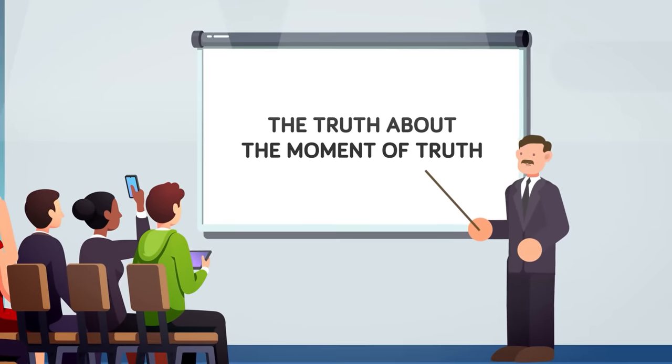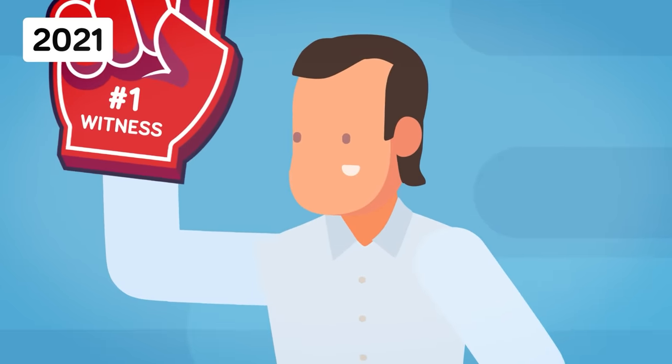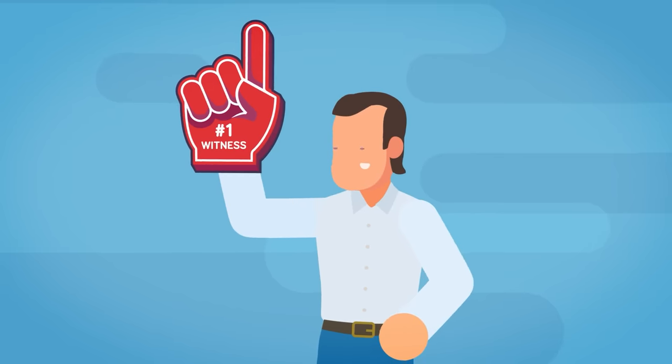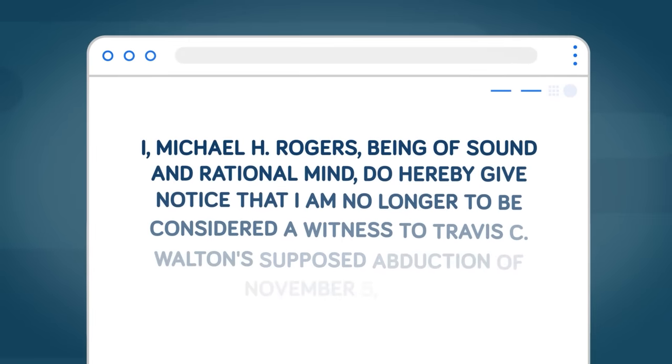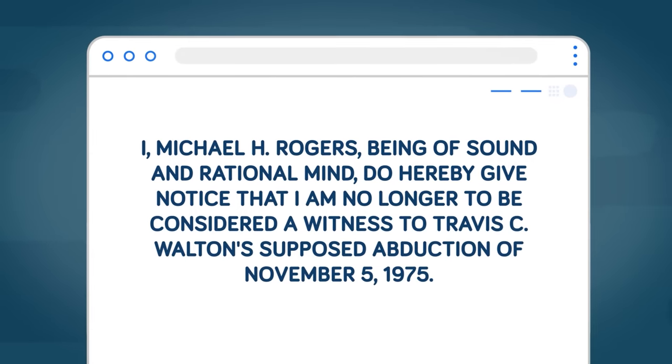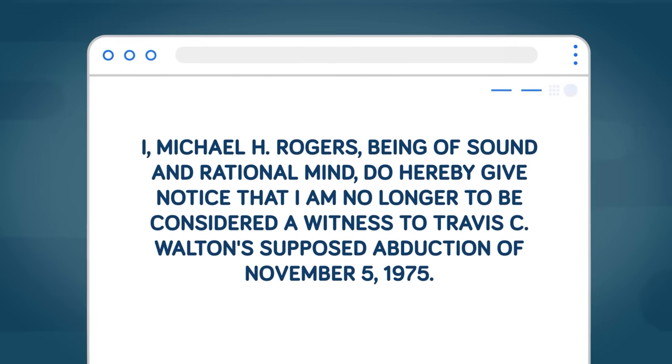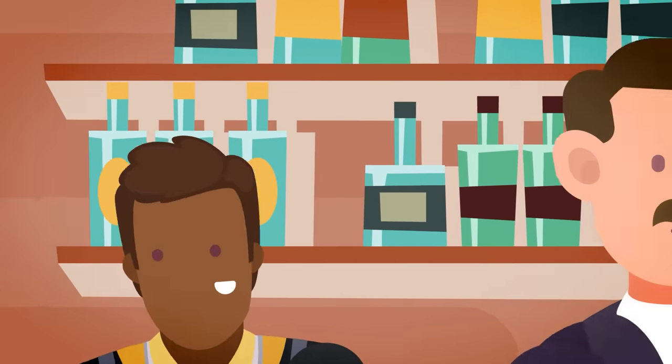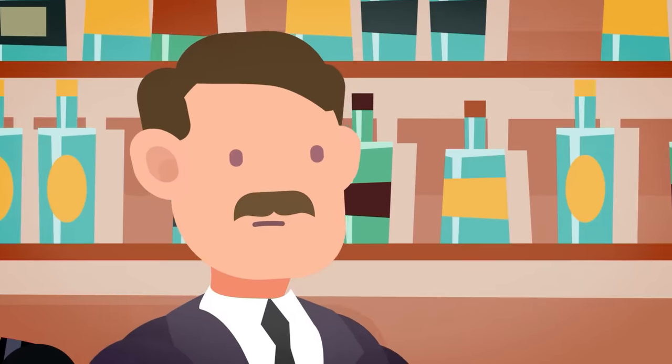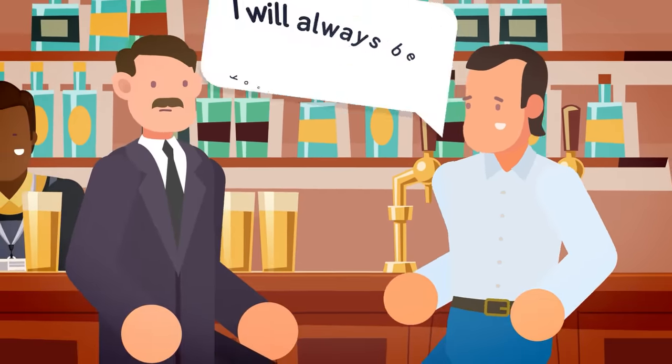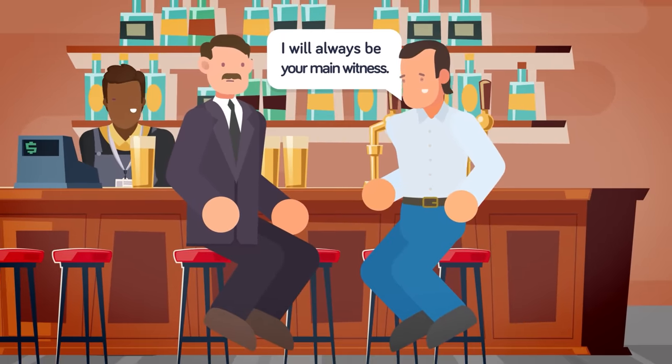In 2021, Walton suffered another public blow to his reputation when Mike Rogers, his greatest defender and number one witness to the Walton abduction, took to Facebook to denounce him. He wrote, I, Michael H. Rogers, being of sound and rational mind, do hereby give notice that I am no longer to be considered a witness to Travis C. Walton's supposed abduction of November 5, 1975. He refused to clarify or say definitively that the abduction did not happen, leaving it all a rather vague mess of theories and confusion. After Travis reached out to him, however, he took the statement back. He apologized and insisted that he always was and always will be Travis's main witness.